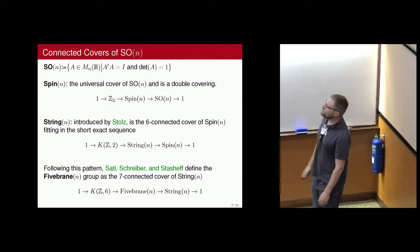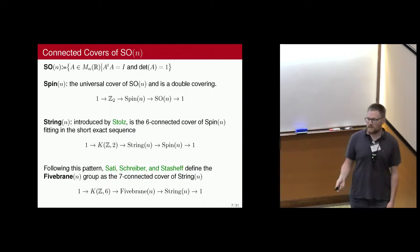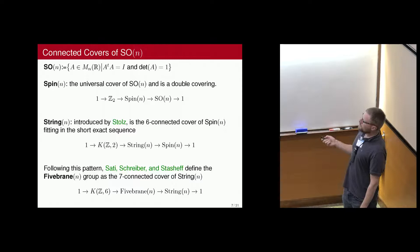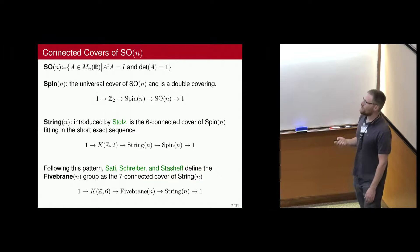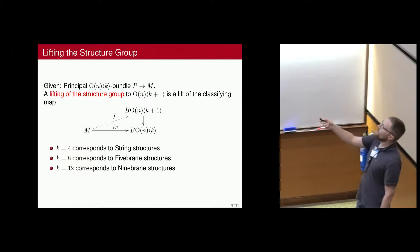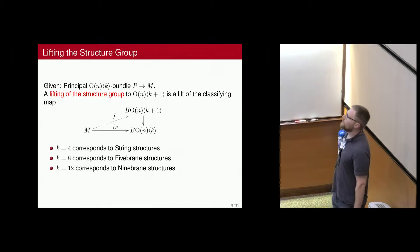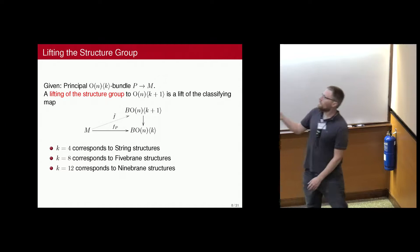SO I probably don't need to tell you much about. Spin is the double cover of SO(n). String, if you don't know what that is — it was first introduced by Stefan Stolz — it's the 6-connected cover of the spin group. And 5-Brane, introduced by Hisham Sati and Jim Stasheff, is then the 7-connected cover over String. So I'm going to be talking about liftings of the structure group. For an O(n,k) bundle P over M, a lifting of the structure group is a lifting along the Whitehead tower. For k=4, these are string structures; for k=8, 5-brane structures; and k=12, something called 9-brane structures, which will come up.